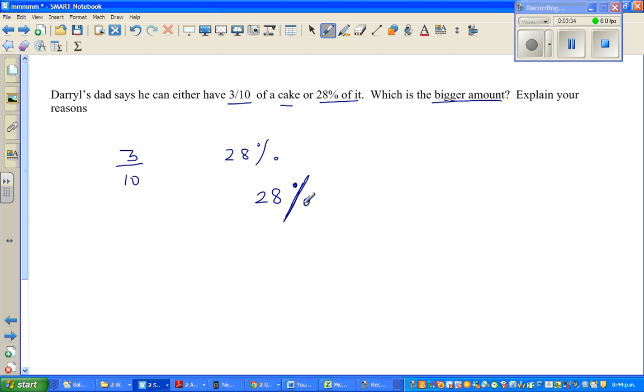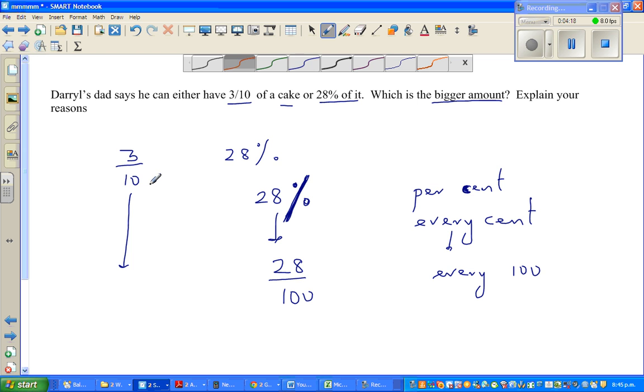Well, 28 percent is out of 100. Percent has come from the word per cent - per cent means every cent, and cent stands for 100. So 28 percent is 28 out of 100, and 3/10 - I want to change this as a hundred. So well, 10 times 10 is 100, so you do the same thing to the top number, so this is 30 out of 100.